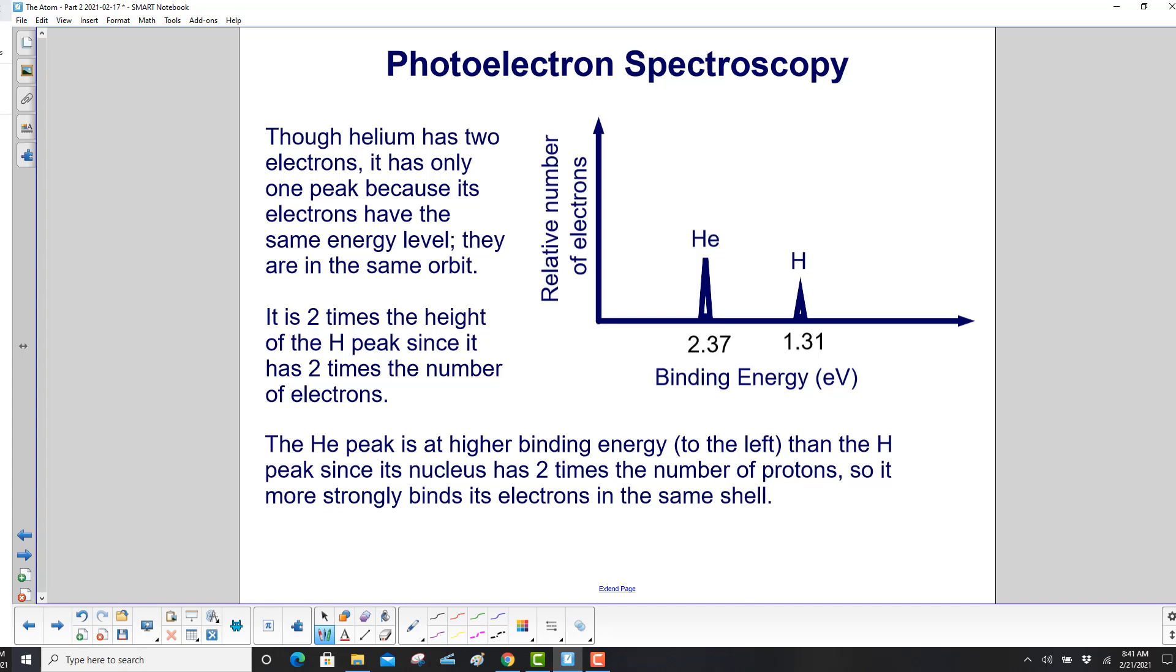Though helium has two electrons, it has only one peak because its electrons have the same energy level. They are in the same orbit. It is two times the height of the hydrogen peak. Here's helium, here's hydrogen, since it has two times the number of electrons.